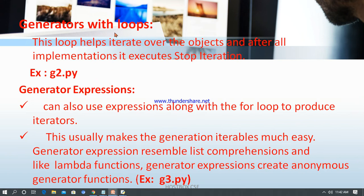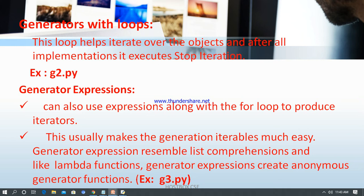Now we are going to see generators with loops and generators with expressions. The for loop helps iterate over objects and after all iteration it executes StopIteration. You can see this in g2.py. Generator expressions can also be used along with the for loop to produce iterators. They resemble list comprehensions, and like lambda functions, generator expressions create anonymous generator functions.